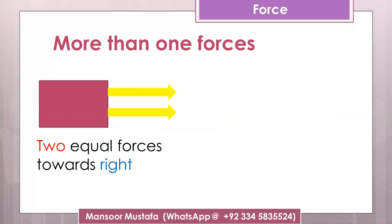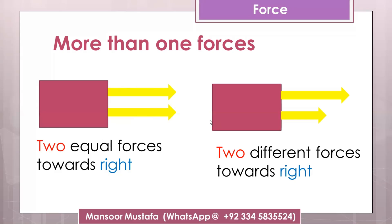Both forces are having the same magnitude and they are acting in the same direction. Just recall from the topic of vectors - the magnitude of a vector is represented by the length of the line. So as force is a vector quantity, if both lines are equal in length, that means their magnitude is also the same, and both are pointed in the same direction.